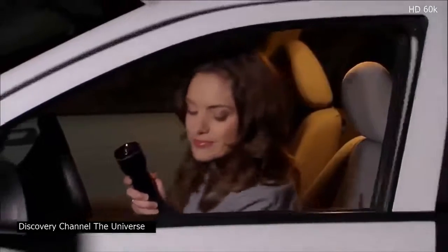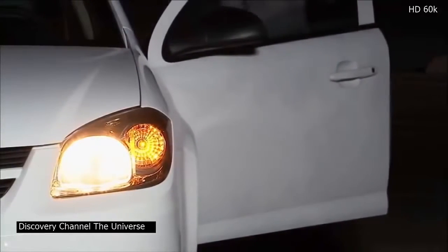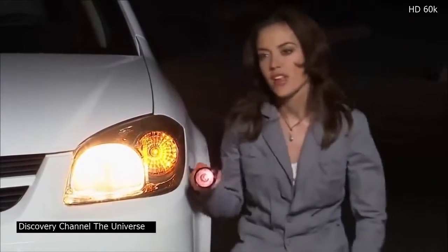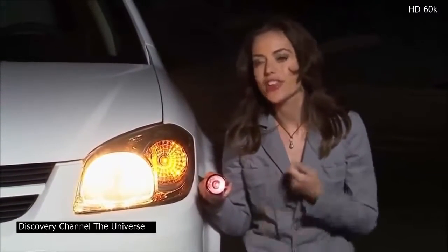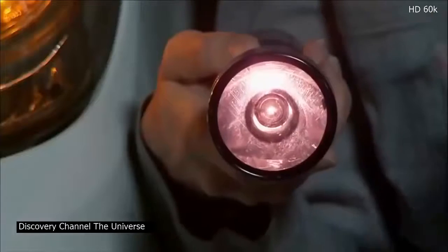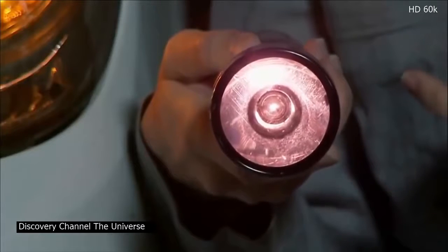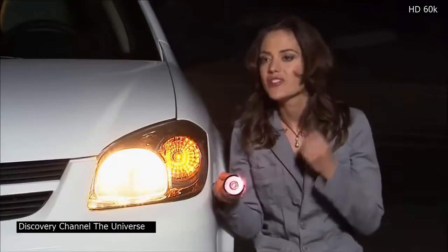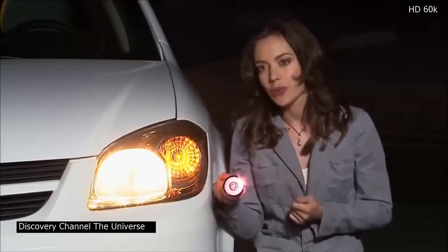But sometimes, a light that appears to be dimmer actually is. This flashlight and the headlights are just like stars in a star cluster. The flashlight next to the headlight looks dimmer, and that's because it is dimmer, not because it's farther away. A dim star next to a bright star in a cluster looks dimmer because the star itself is dimmer, not because it's farther away.